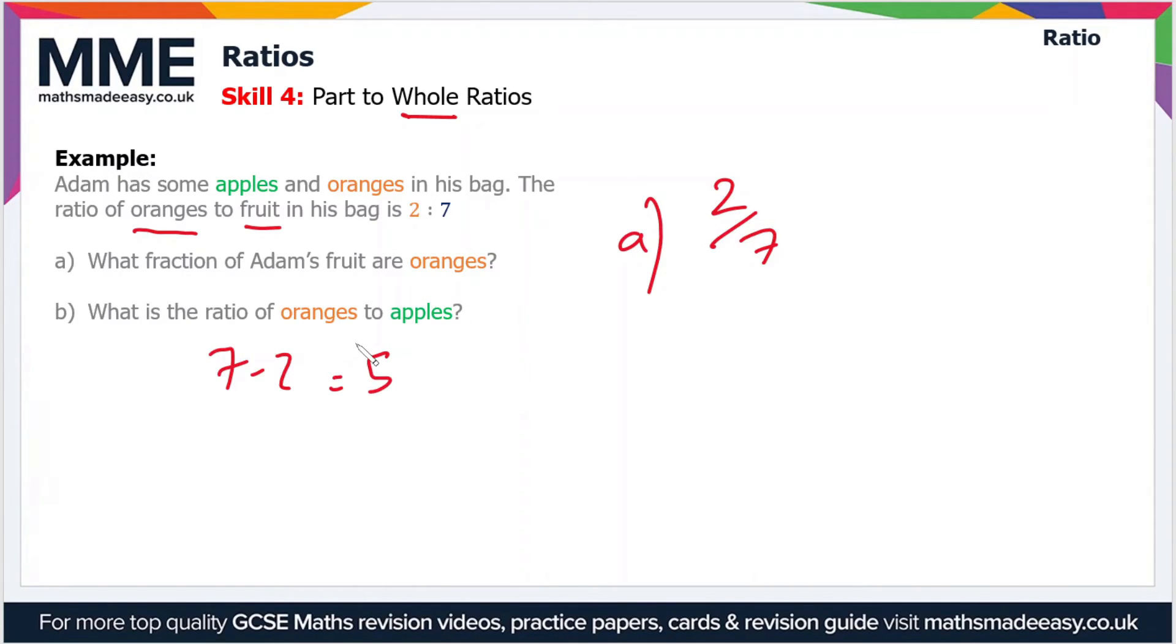So now we can express the ratio of oranges to apples, seeing as though the parts oranges are 2 and the parts apples are 5. So the answer to part b is two fifths.